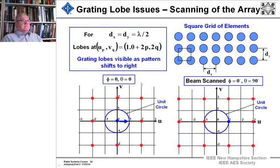If we scan the array and say grating lobes are visible as the pattern shifts to the right. Here theta is equal to 0 and phi is equal to 0, and that is right here. And if we shift theta to 90 degrees and phi to 0, that shifts the beam. And you'll see the grating lobes become visible as the pattern shifts to the right. So here's the main lobe, and you get just barely in that edge.